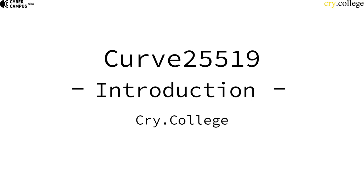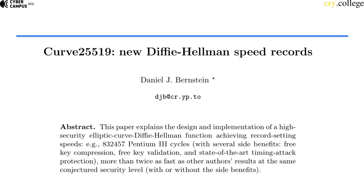This section is about Curve 25519. Curve 25519 was published by Daniel Bernstein, a quite famous cryptographer — one of the biggest cryptographers of our time — and it created new speed records for Diffie-Hellman.